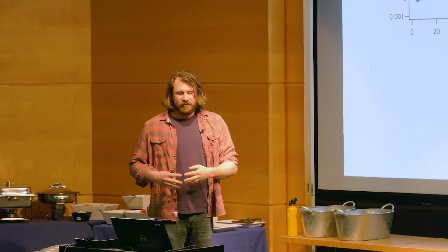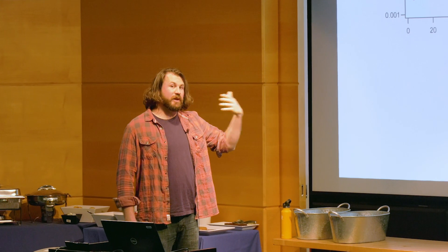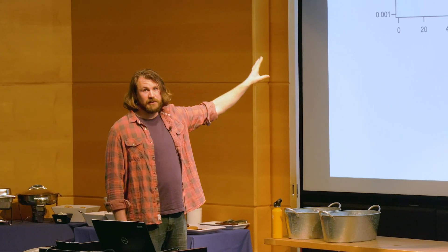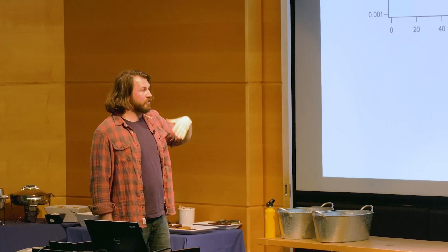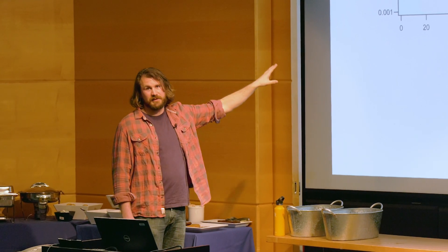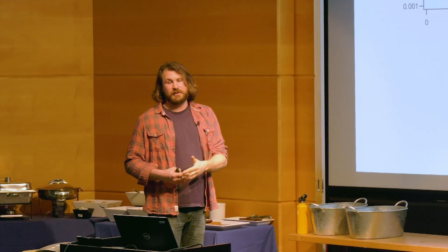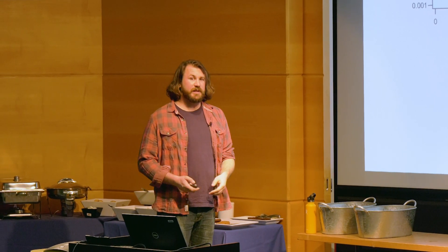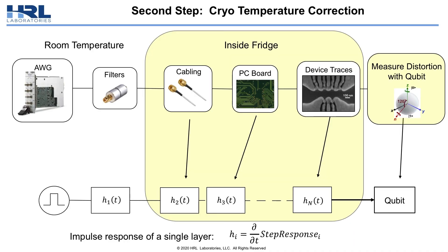This is the most significant result we have by correcting for pre-distortion in the context of qubits and qubit control. For the rest of this talk, I'll be discussing further improvements we're trying to make on this system, though we haven't yet connected these to real qubit control sequences. We've demonstrated good correction for the AWGs and room temperature filtering, but there's still a significant part of the signal chain inside our fridge — cabling, PC boards, and device traces — that we're not yet correcting for.